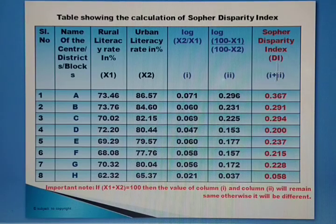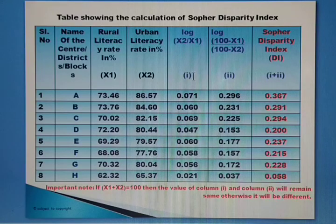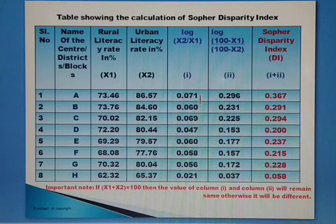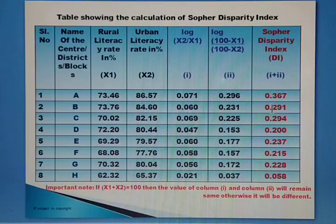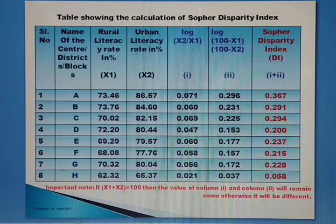To find the Sopher's Index (Column 3), simply add Column 1 and Column 2 values. The first column value is 0.071 and the second is 0.296. Adding these two gives the DI value of 0.367.